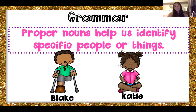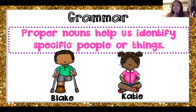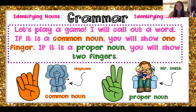Proper nouns help us identify specific people or things. So instead of just saying boy, I know that this boy's name is Blake. Instead of just saying girl, I know that this girl is Katie. That's like if I was trying to give someone directions to the school — I could say it's on the street, but that would take a really long time to find the school. But if I tell them the specific name of the street, it helps them know exactly where they're going.